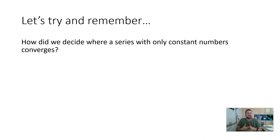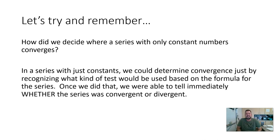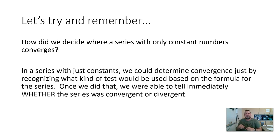Let's say we had a series that only dealt with constant numbers. When we introduced power series, we said there are x-values in our infinite series. When we were looking at series, we wanted to know whether or not it converges. There were a bunch of different tests: the alternating series test, the ratio test, whether or not it was a P-series, the limit comparison test, the direct comparison test — all different tests to tell whether a series was convergent or divergent when it didn't have x-values.